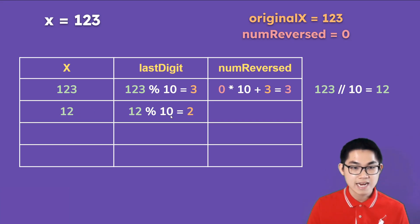We put 12 here. And then again, we get the last digit, which is 2. Then we get num reverse, which is 3. So we have 3 here times 10 plus the last digit, which is 2, and that's going to give you 32.